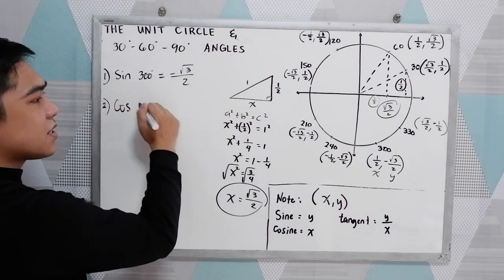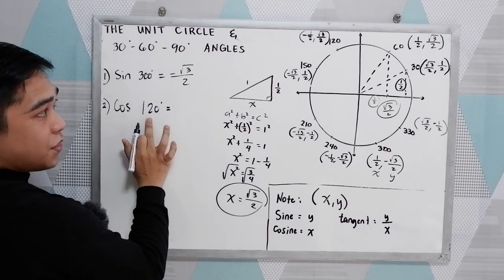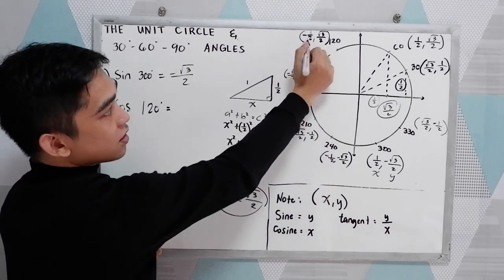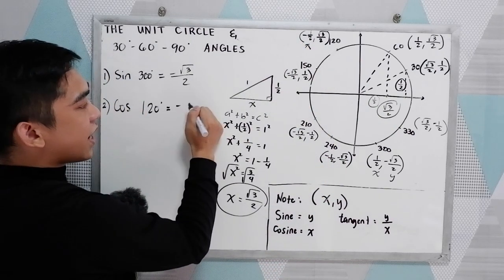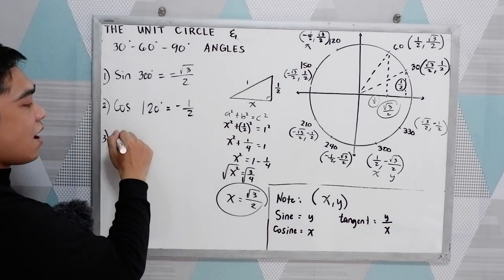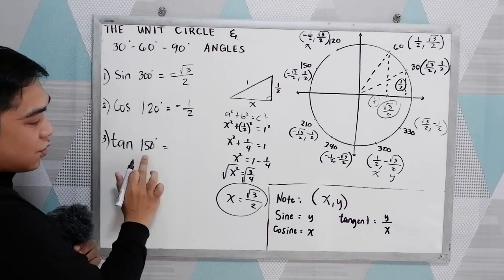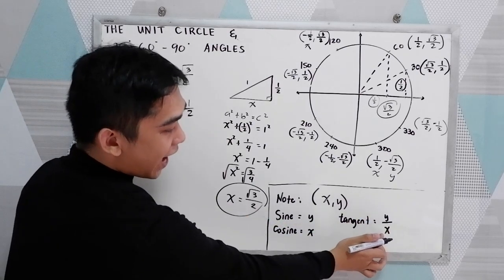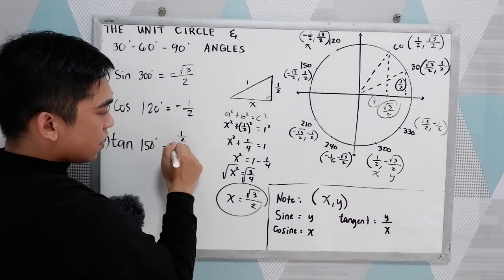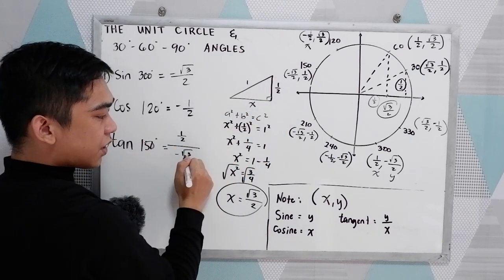Second, let's say we have cosine 120 degrees. Locate 120 degrees. Cosine is x, so x, we have negative one half. Let's say we have tangent 150 degrees. Tangent is y over x. So locate 150 degrees. Our y is one half, all over x, which is negative square root of three over two.